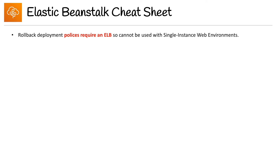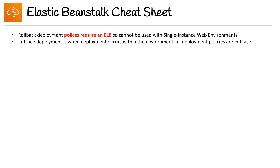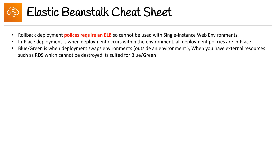Rolling deployments cannot be used with single instance web environments. In-place deployment is when deployment occurs within the environment — all deployment policies are in-place. Blue/green is when deployment swaps environments. When you have external resources such as RDS which cannot be destroyed, blue/green deployment is the suited approach.